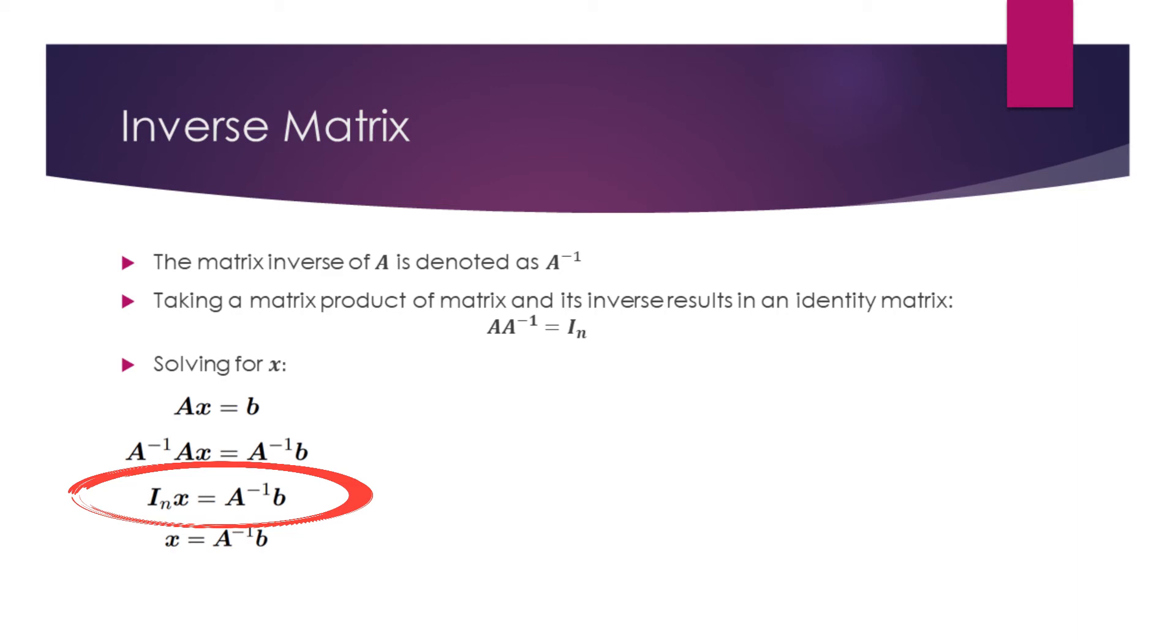But multiplying a vector by the identity matrix does not change the vector. Thus, we obtain that the unknown vector x is equal to the matrix product of B and the inverse of A.